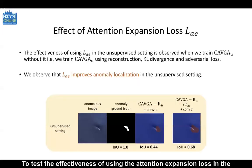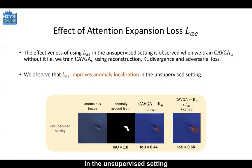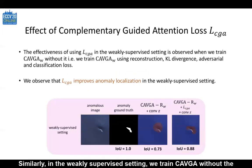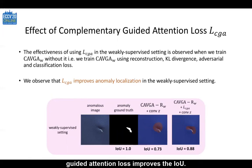To test the effectiveness of using attention expansion loss in the unsupervised setting, we train CAVGA without the attention expansion loss. We observe that the attention expansion loss improves the localization in the unsupervised setting. Similarly, in the weakly supervised setting, we train CAVGA without the complementary guided attention loss and observe that the complementary guided attention loss improves the IOU.